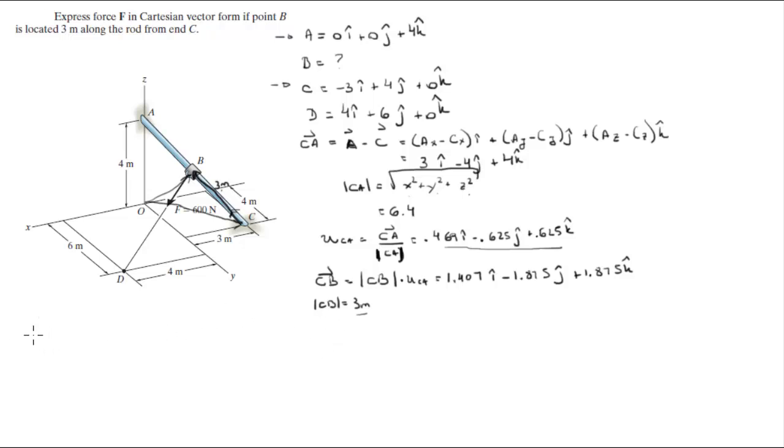Now follow me here. We know that CB is equal to B minus C. Therefore, you know that vector B, the position vector B which is the vector we're trying to find, is gonna be vector CB plus C. We just pass this C towards the other side of the equal sign and it passes from a negative to a positive and you get this equation. So basically you just plug them in. Vector CB is given right here, so you plug this in: 1.407i minus 1.875j plus 1.875k plus position vector C which we have right here, which is negative 3i plus 4j plus 0k.